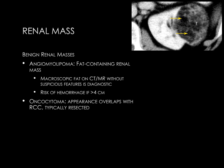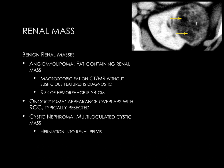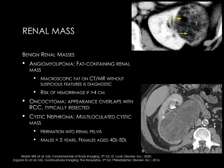Renal oncocytoma is a benign solid renal mass whose appearance typically overlaps with RCC. For this reason they are typically resected, as imaging cannot reliably differentiate oncocytoma from RCC in many cases. Cystic nephroma is a multi-loculated cystic mass which classically demonstrates herniation into the renal pelvis. This occurs in young males and middle-aged females. The CT image demonstrates this multi-septated renal mass herniating into the renal pelvis, classic for cystic nephroma.